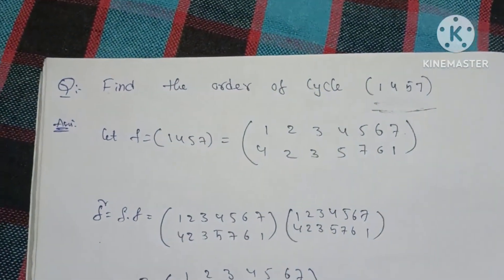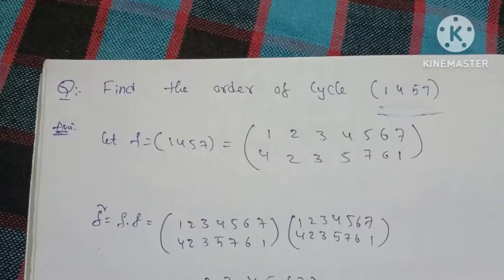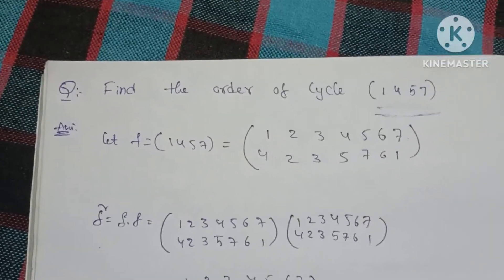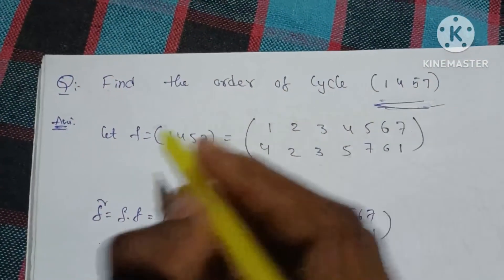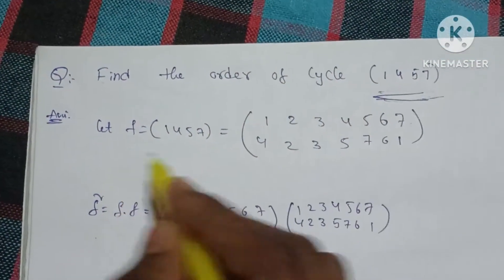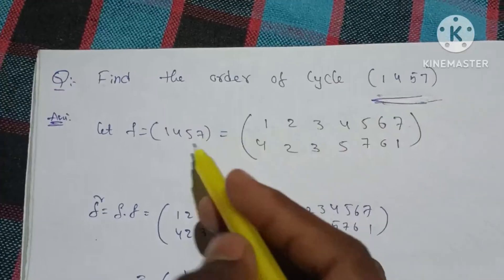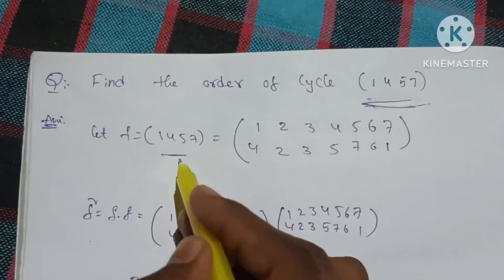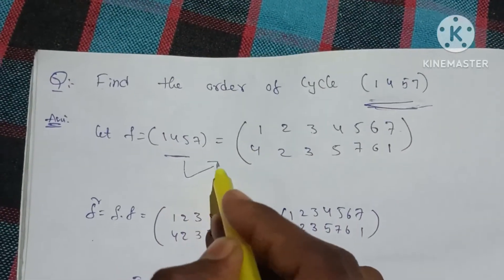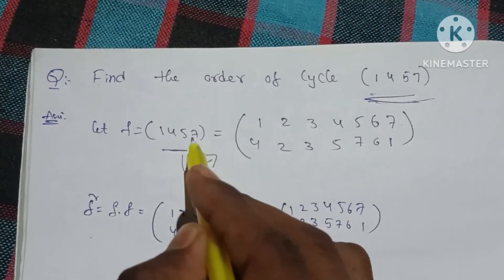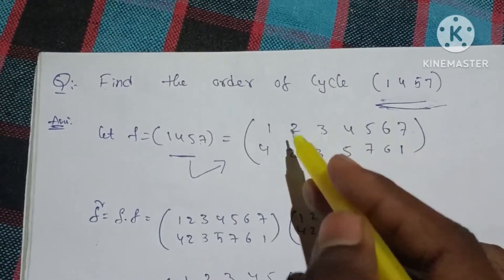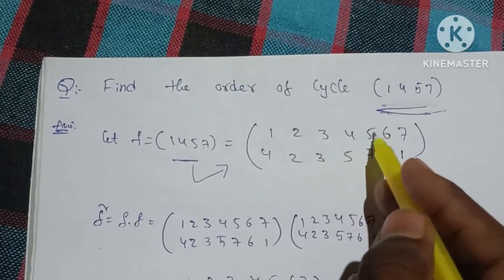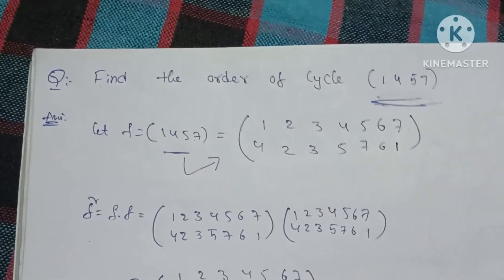You can make a comment. So F is equal to — the elements are 1, 2, 3, 4, 5, 6, 7 mapped to 1, 2, 3, 4, 5, 6, 7.